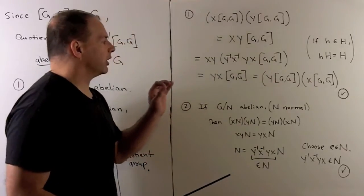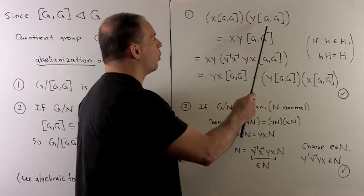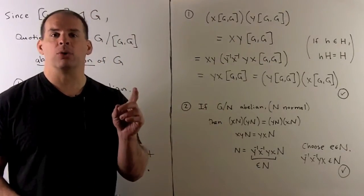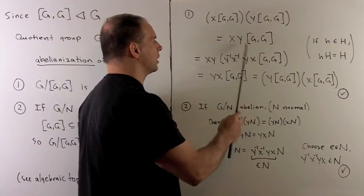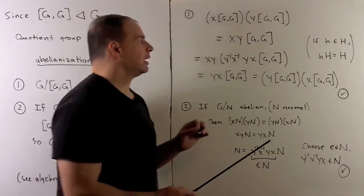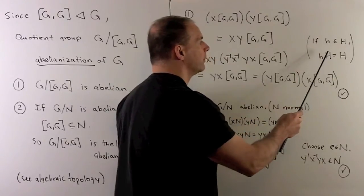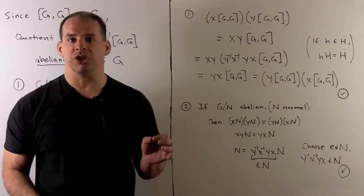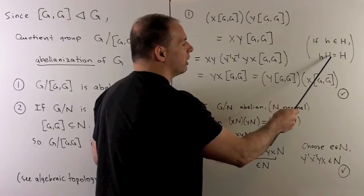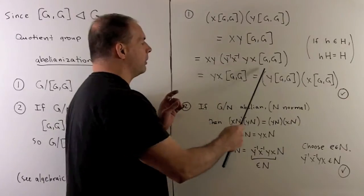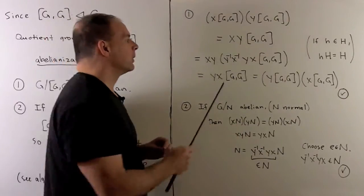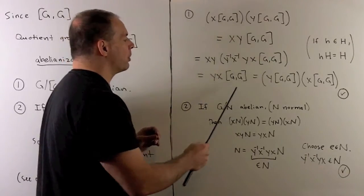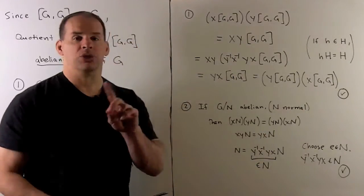For the first assertion, we want to show the quotient is abelian. We'll show that if we take any two cosets and multiply in one order, it's the same as multiplying in the opposite order. Taking cosets for x and y, since we have a normal subgroup, multiplication gives us xy times the commutator subgroup. Now we use a trick: if I pick any element in a subgroup h, multiplying that element by h just gives h back — closure under multiplication. So we can pull out the commutator y inverse x inverse yx, which cancels with xy, leaving yx. That gives us the coset for y times the coset for x — we've switched the order, so it's abelian.